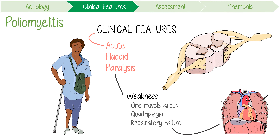Respiratory failure due to bulbar paralytic poliomyelitis is a medical emergency and has a mortality rate of approximately 60%. Proximal muscles are usually affected more than distal muscles, and legs are usually more affected than arms. This often occurs in an asymmetrical manner.